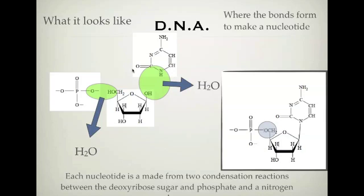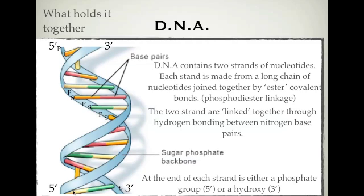This is one nucleotide. Depending on what nitrogen base is attached is what the nucleotide will be called. The linkage between the phosphate and the deoxyribose sugar is known as a diphosphoester — or diphosphate ester linkage. Putting it all together fully, we get our double helix: two strands of nucleotides curling around. Each strand is made from a long chain of nucleotides joined by ester-covalent bonds. The two strands are linked together through hydrogen bonding between nitrogen base pairs.